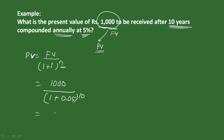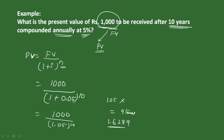So this is 1,000 divided by (1 plus 0.05) to the power 10. This equals 1.05 multiplied 9 times, giving 1.6289. So 1,000 divided by 1.6289 gives us 614 as the answer.